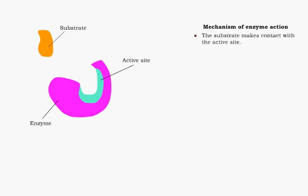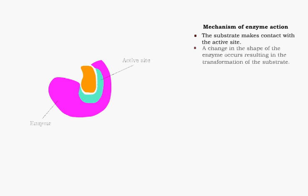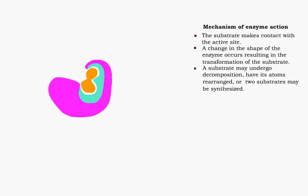The first step in the action of an enzyme is that the substrate makes contact with the active site of the enzyme. In order to carry out the reaction, the shape of the enzyme is changed and the reaction causes the substrate to change. This could be a rearrangement of its atoms, a decomposition or a synthesis of two substrates.